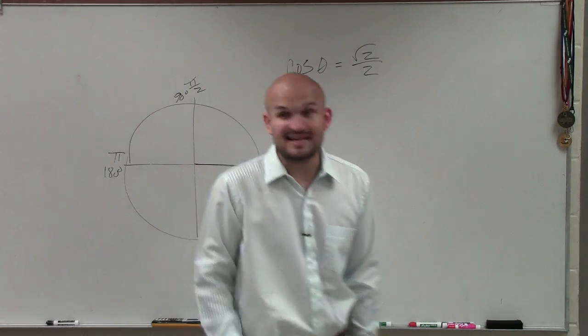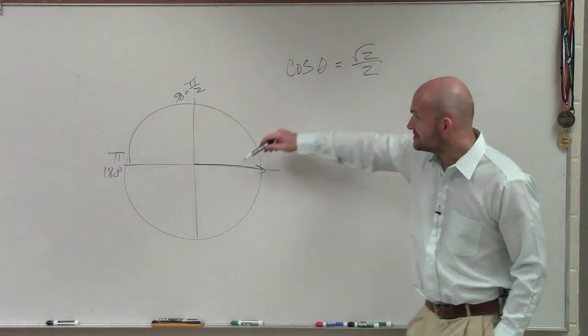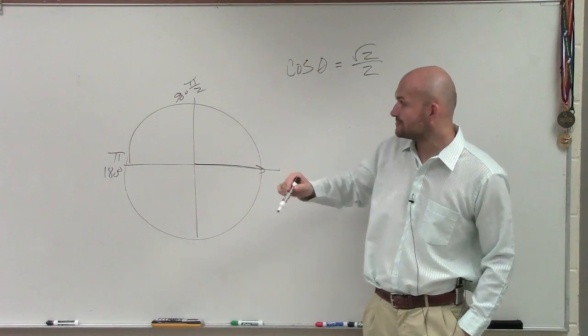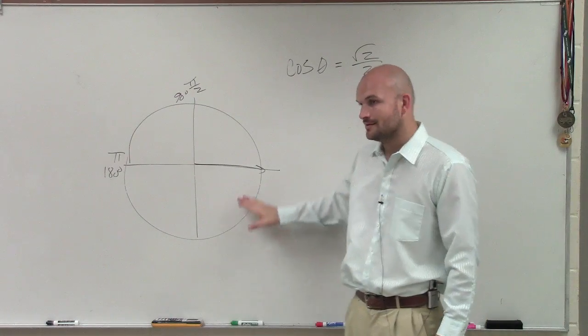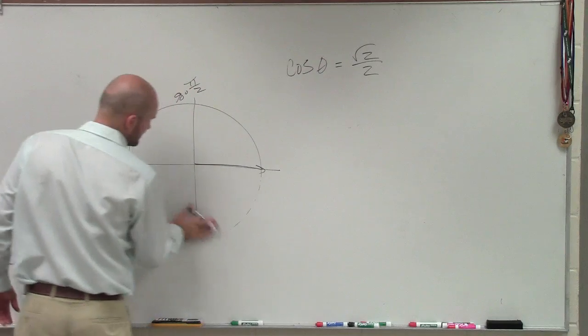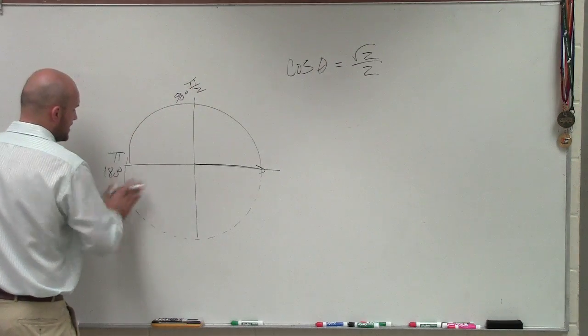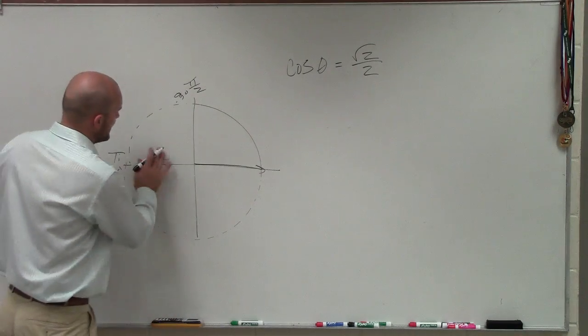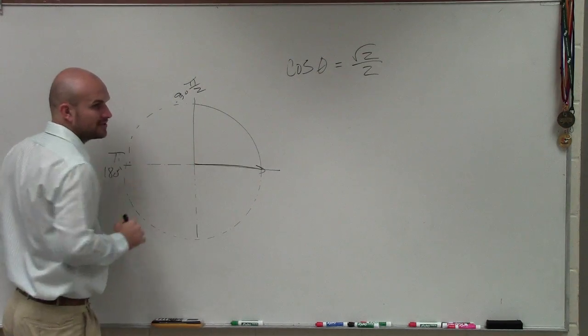They said they only want you to find the angle in between 0 and 90 and 0 and pi halves, right? So guess what? We don't care about the rest of this. So I'm just going to put it as like a dotted line. We don't care about the rest of the unit circle.